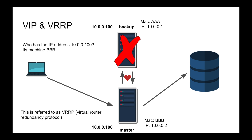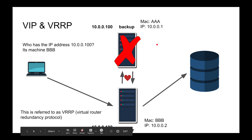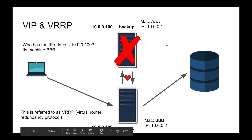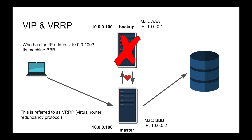That whole protocol we discussed is called Virtual Router Redundancy Protocol — VRRP. Those machines are acting like a virtual router, like a gateway. With VRRP, you have a group of machines that all share the same VIP, they communicate and gossip among each other and agree on a master — kind of like ZooKeeper, but at a lower level. One is master, the rest are backups.